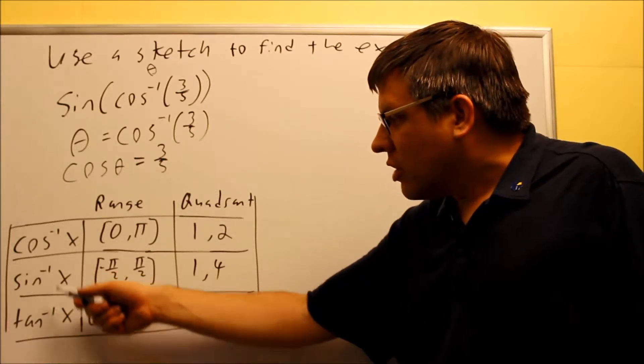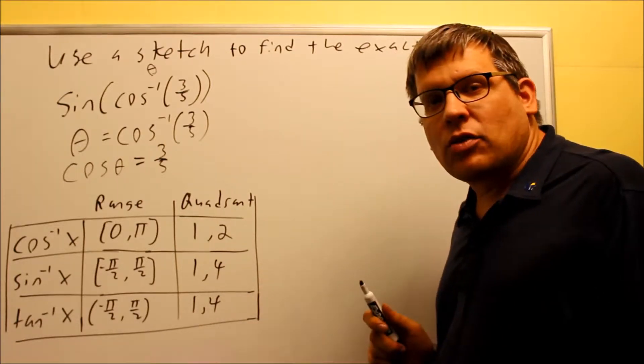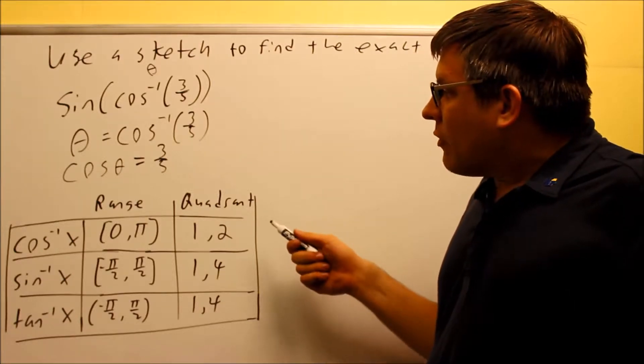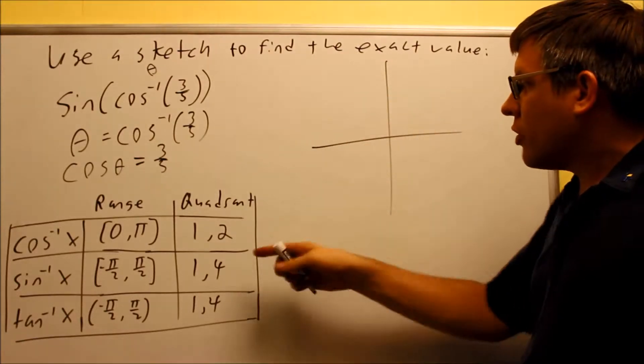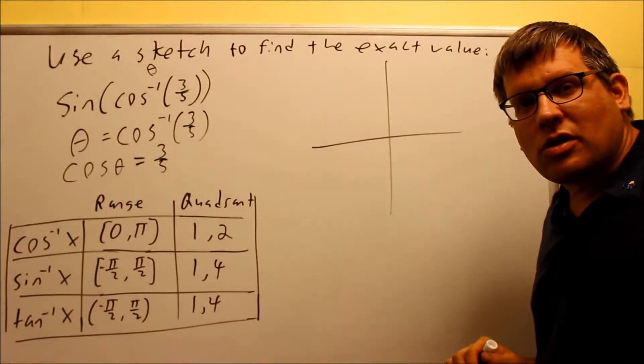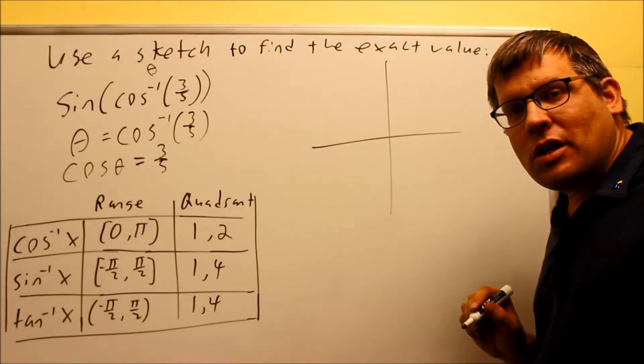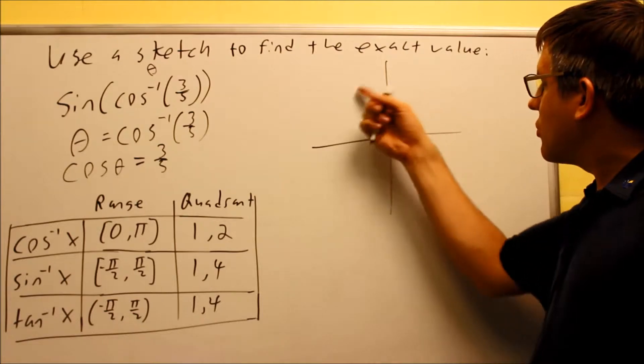And then we have the other trig functions here, the inverse sine and inverse tangent. And those have specific quadrants that we have to draw those in as well. So I know that I have a choice to draw the triangle in either quadrant one or quadrant two. That's exactly what the table says here. Now we have to decide which one of these two quadrants it's going to be. And this is where you're going to use all students take calculus. Now out of these two quadrants, it says that my cosine has to be positive.